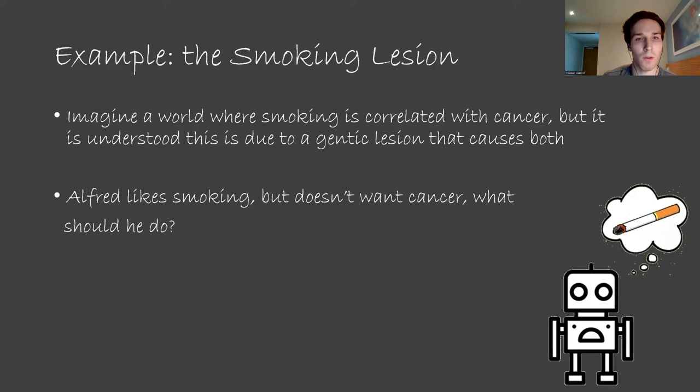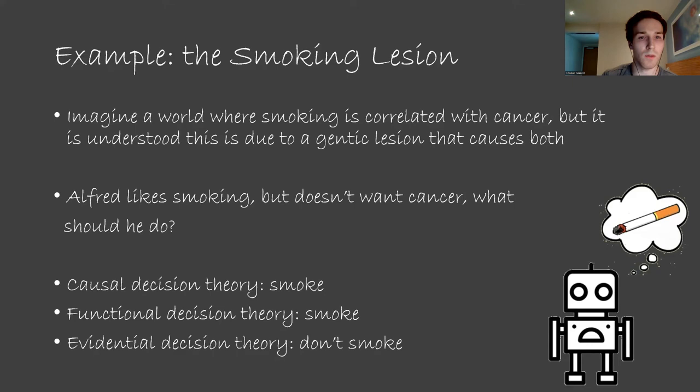Causal decision theory focuses on causal effects. So if Alfred uses causal decision theory to make decisions, he will decide to smoke, since there is no causal link between smoking and cancer. If Alfred uses functional decision theory, he will come to the same conclusion, since the decision making procedure, which he thinks of as a function, doesn't affect whether or not he gets cancer. If Alfred uses evidential decision theory, though, he will be worried that smoking is evidence that he has the genetic lesion, which could lead to him getting cancer. Due to this, Alfred won't smoke if this is the decision making procedure he's using. We see different decision making procedures have different outcomes.